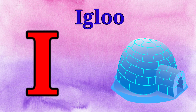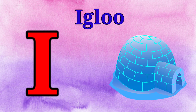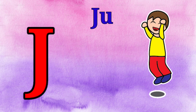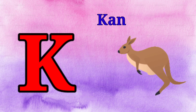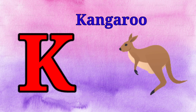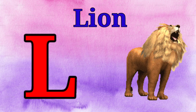I is for igloo, i-i-igloo. J is for jump, j-j-jump. K is for kangaroo, k-k-kangaroo. L is for lion, l-l-lion.